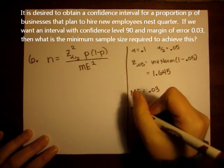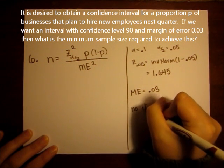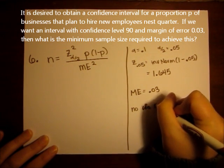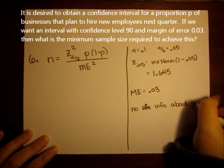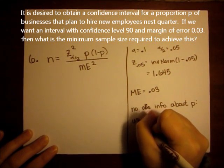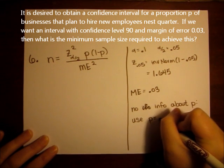When we're given no information about the proportion, so given no information about P, we're always going to use P equals 0.5.